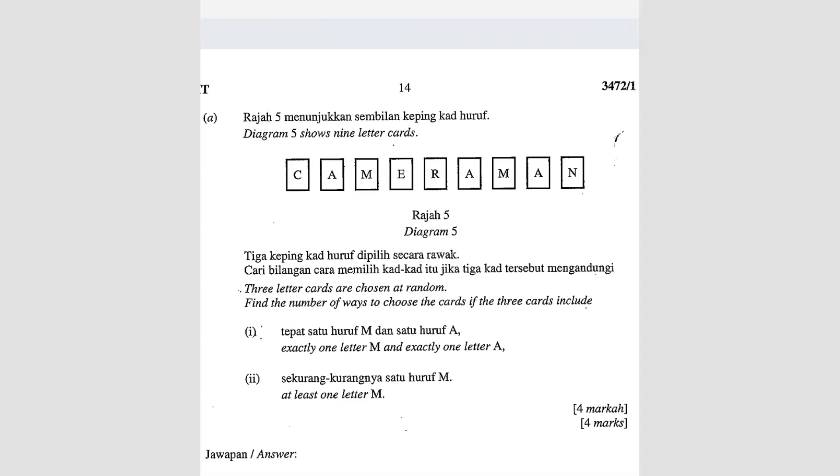Question number 8. Diagram 5 shows 9 letter cards. 3 cards are chosen at random. Find the number of ways to choose the cards if the 3 cards include... First of all, before we go to the question, they said they want 3 cards.